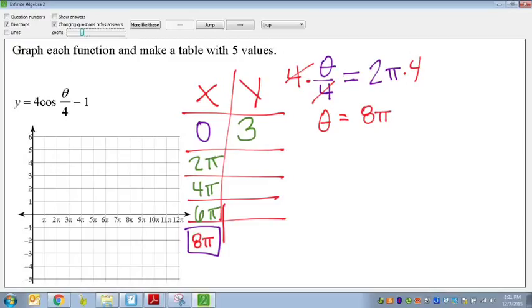Now, with 2 pi, you can actually plug that in straight up. So, do cosine and then type in 2 pi divided by 4. And you should get an answer of 0, which is, that's correct. So, plug in 0, 0 times 4 is 0, minus 1 gives me negative 1.